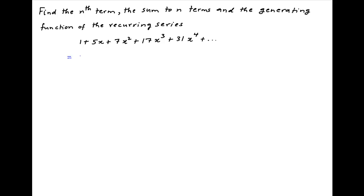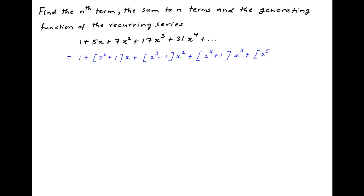The given series can be written as 1 plus (2 squared plus 1) multiplied by x, plus (2 cubed minus 1) times x squared, plus (2 raised to the power 4 plus 1) times x cubed, plus (2 raised to the power 5 minus 1) times x raised to the power 4, plus and so on.